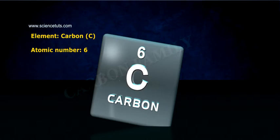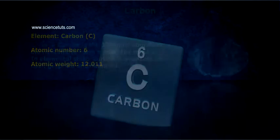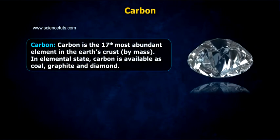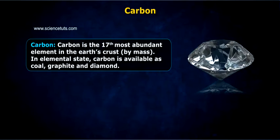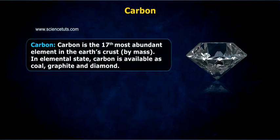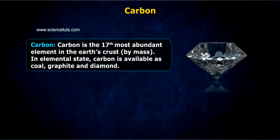Carbon C, Atomic number 6, Atomic weight 12.011. Carbon is the 17th most abundant element in the earth's crust by mass. In elemental state, carbon is available as coal, graphite and diamond.